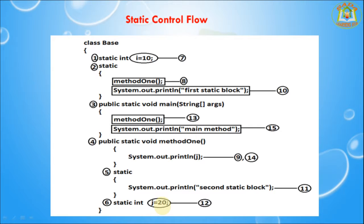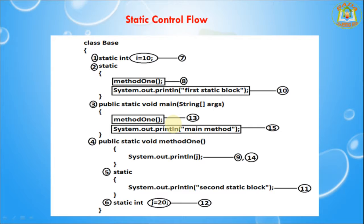Next it assigns the static variable j value as 20. After that it comes into the main method and calls the main one method. The main one method prints the j value. After that it goes to the ending of the main method.